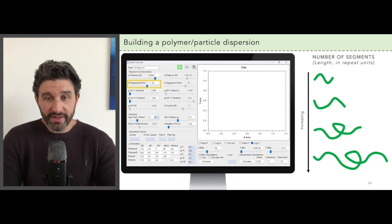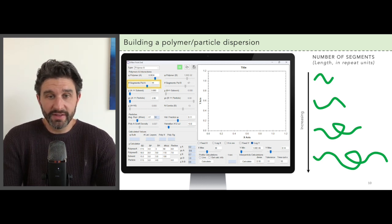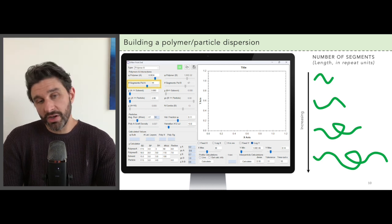The next parameter is the number of segments in the polymer. This is just the size of your chains. You have a rather broad range you can work with from quite short oligomers up to very long polymers.